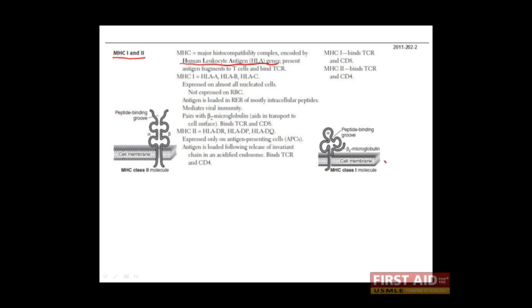MHC class 1 molecules here, for example, can display antigens here in what is known as the peptide binding groove. MHC class 2 molecules also have a peptide binding groove and can present antigen there.